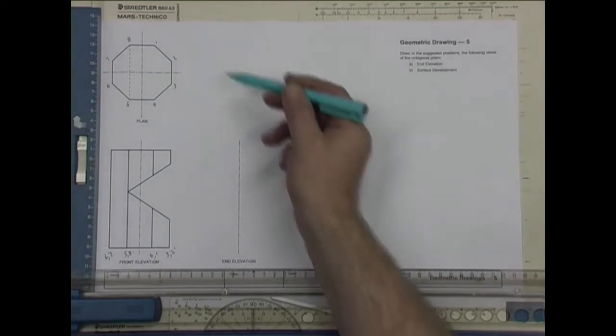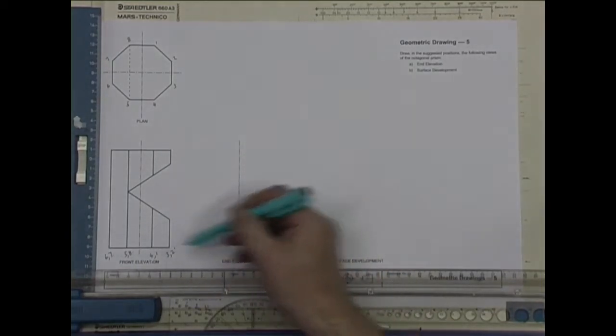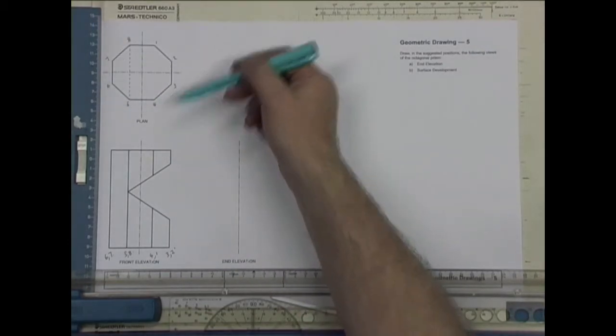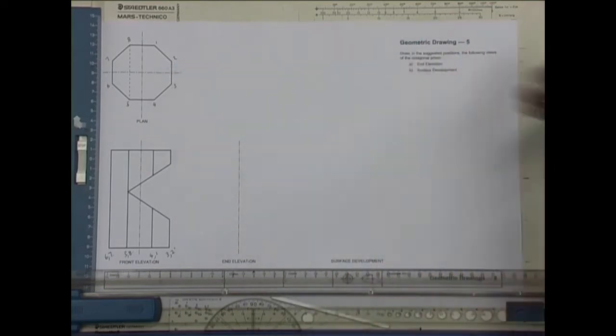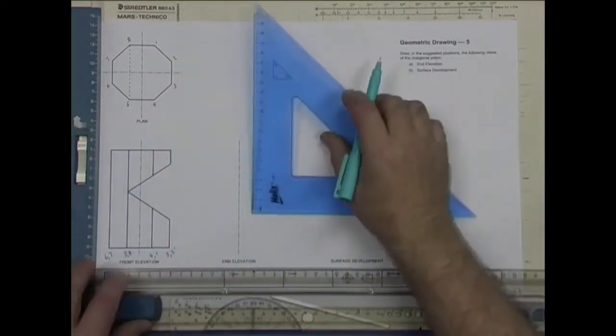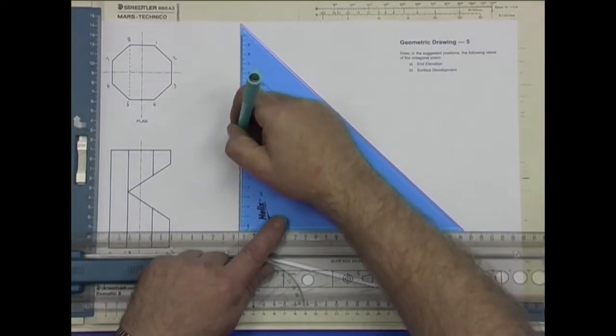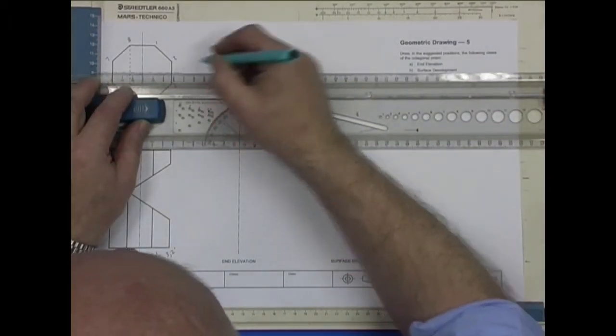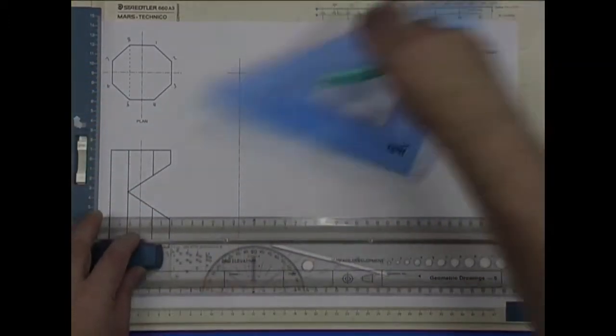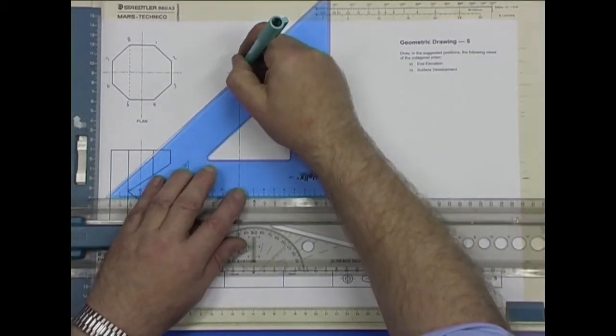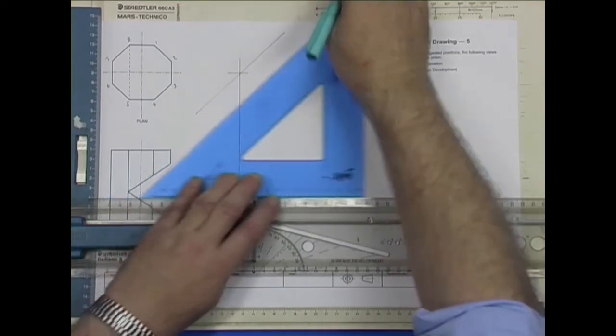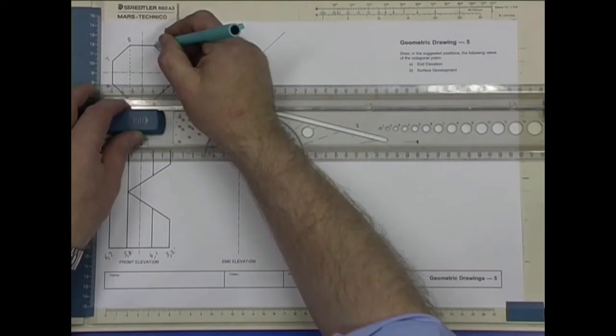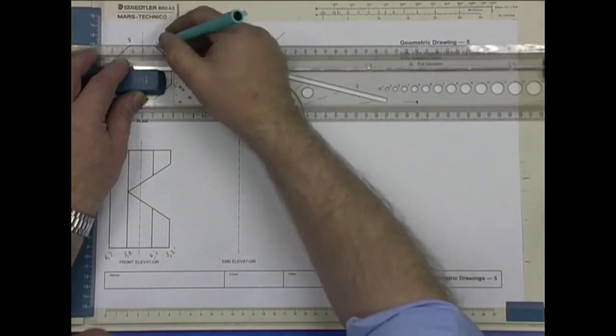Right, we're going to project across here. We're going to get our heights across here, but we'll need the widths from the plan. Projector of one view, size of another. We'll extend. We'll use our abutment line method by just extending the center line up and along. 45 degrees pointing in towards the front elevation.